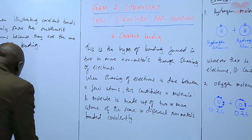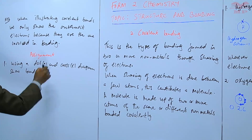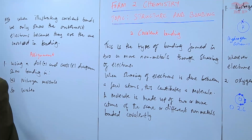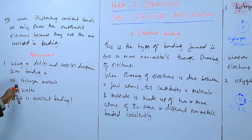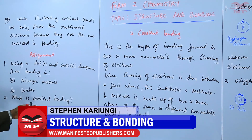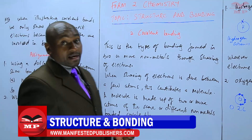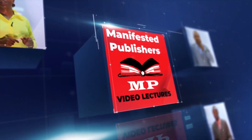We'll now have an assignment. Question one: using a dot and cross diagram, show the bonding in (a) a nitrogen molecule and (b) water. Question two: what is covalent bonding? We'll stop there until the next lesson. Goodbye.